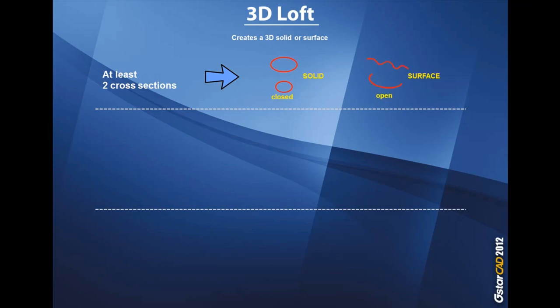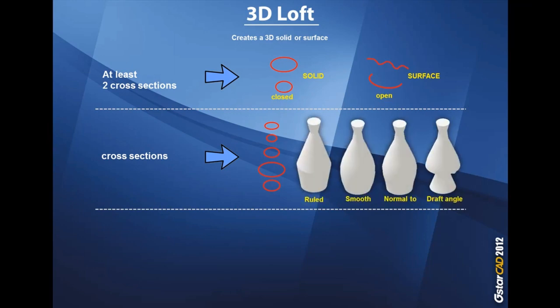What more does 3D Loft offer in GStarCAD 2012? You will have many options for doing 3D Loft. One of these options is cross section. You can do the Loft operation by cross section and then you will get the following 3D solid effects: Ruled, Smooth, Normal 2, and Draft Angle. Those are totally different 3D solid effects.